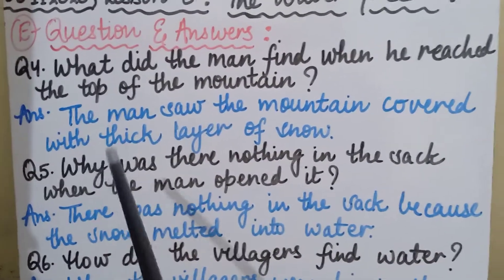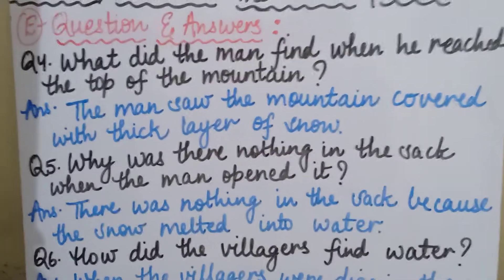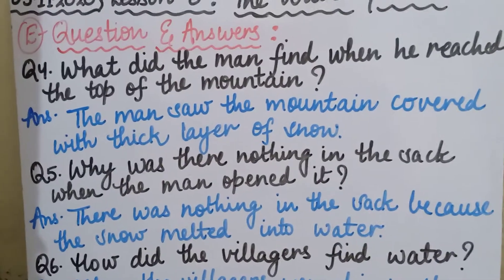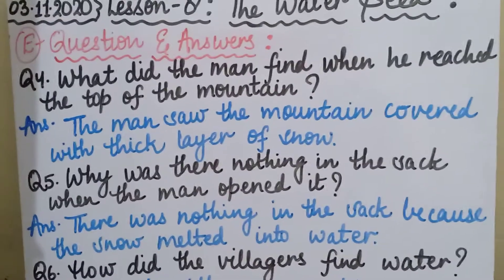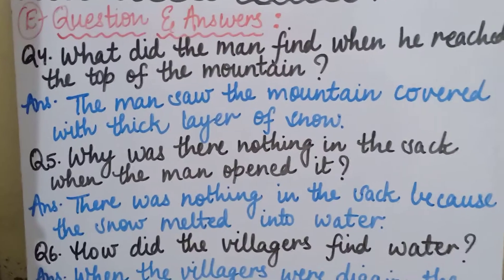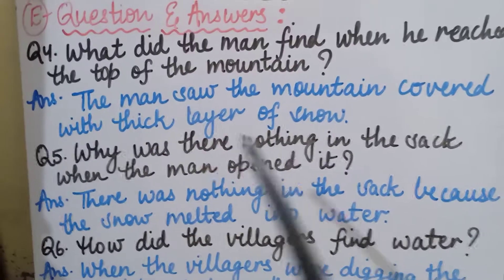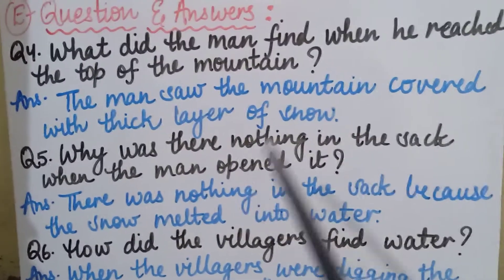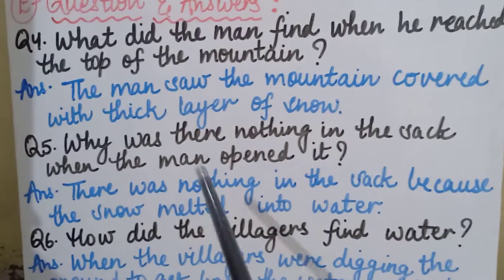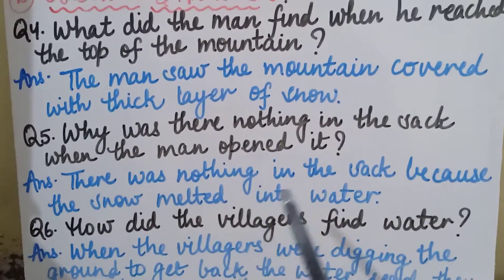Question number five: Why was there nothing in the sack when the man opened it? The answer is: there was nothing in the sack because the snow had melted into water.